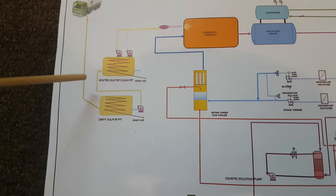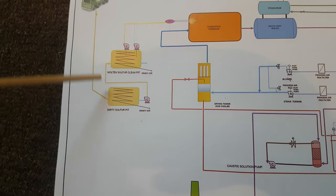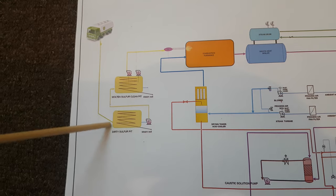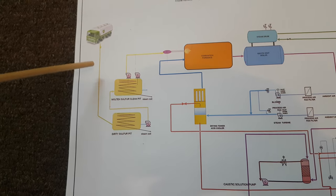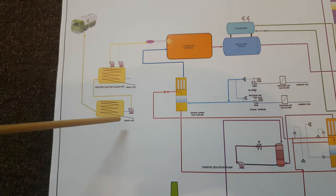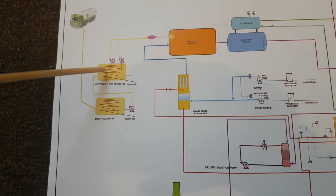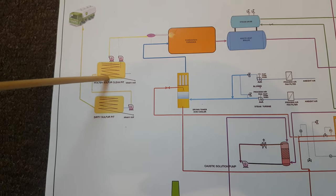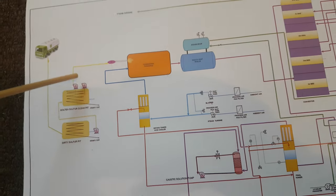This is the molten sulfur pit — clean sulfur and dirty sulfur pit. We get the sulfur raw material as sulfur from the truck. We unload it in the dirty pit. If the quality of the sulfur is good, then we directly send it to the molten pit. Here you can see there is a steam coil — we supply continuous steam to the steam coil so that our sulfur remains in molten state.